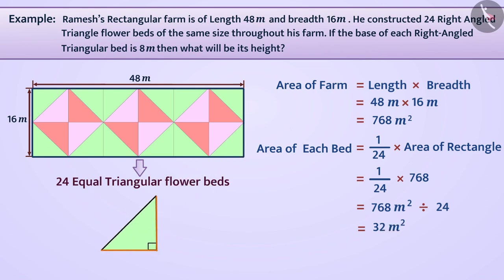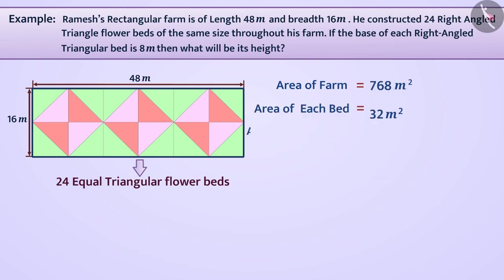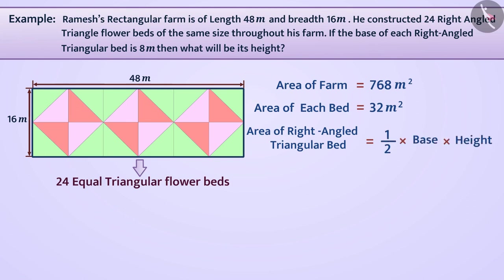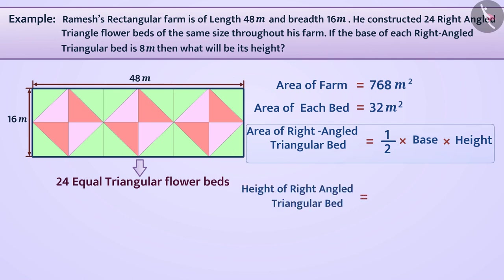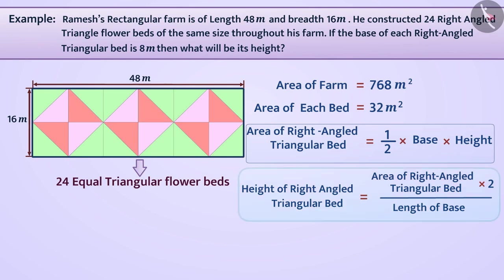In a right angle triangle, two sides are perpendicular to each other, so we can take one as base and the other as height. Since the area of the right angle triangular bed is half multiplied by base multiplied by height, the height equals area multiplied by 2 divided by the length of base. With base 8 meter and area 32 square meter, the height is 32 multiplied by 2 divided by 8, which equals 8 meter.